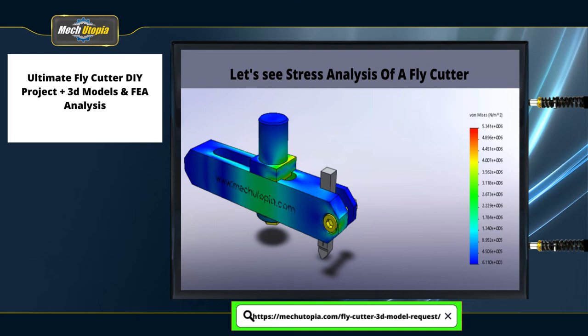There are no red segments in the analysis results, which means we are good to go with these materials and dimensions. Tests were done at 1000 RPM and 1500 RPM. Since 1500 RPM is not a realistic use case for fly cutters, we recommend not exceeding 1000 RPM. Always start at 500 RPM and increase gradually if everything looks good.